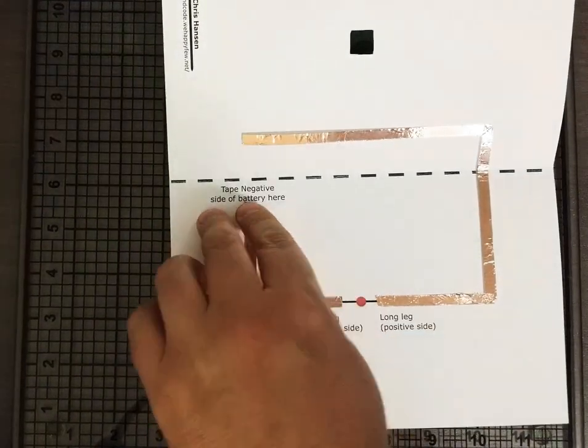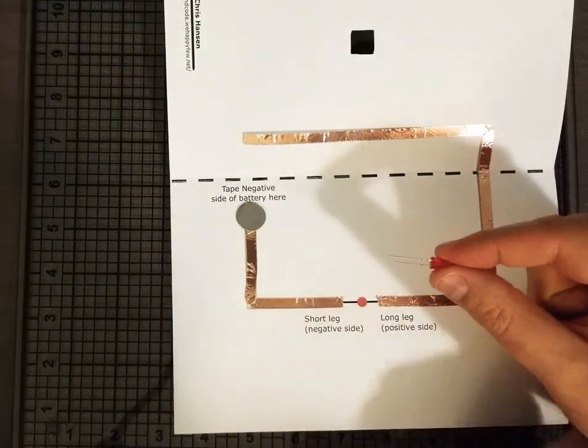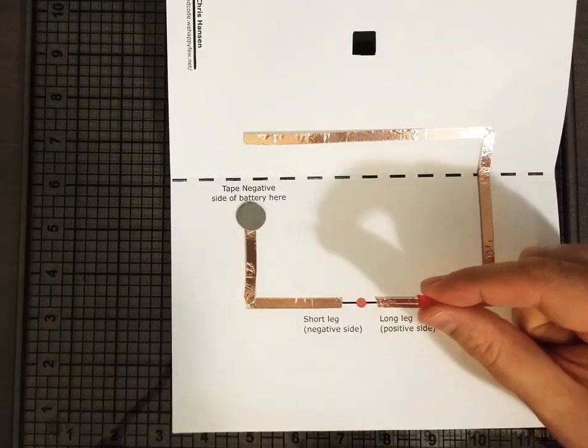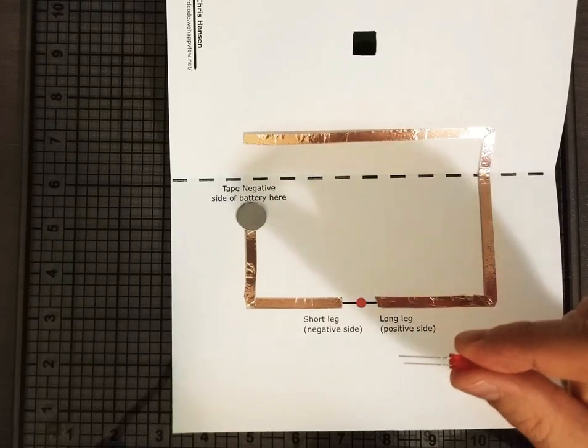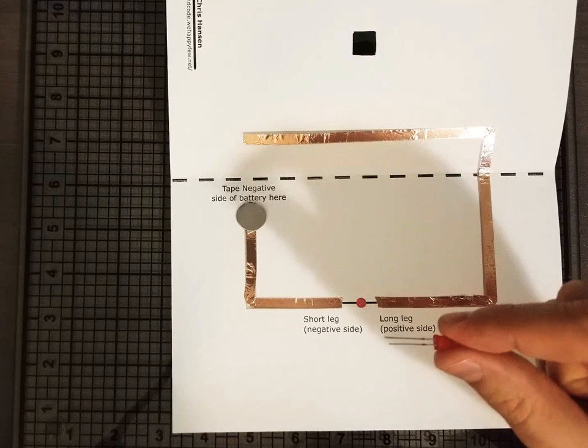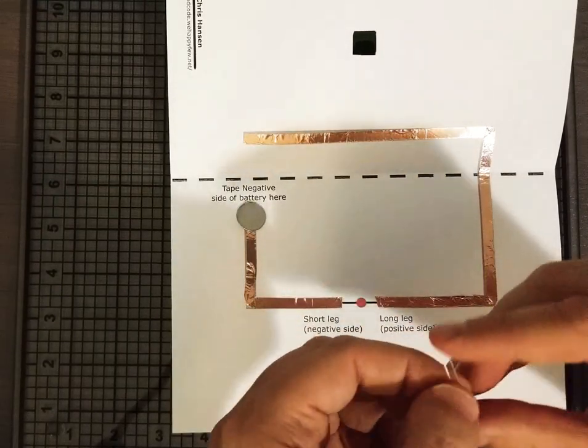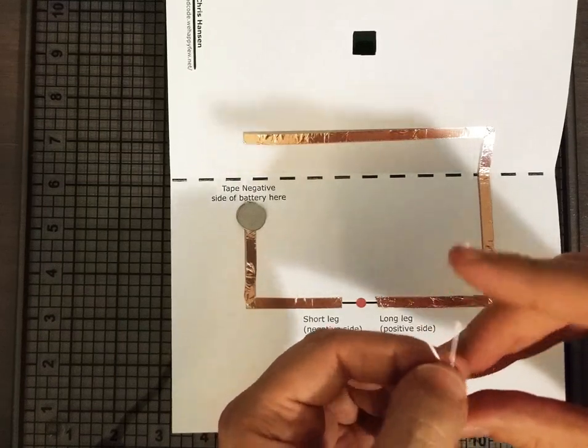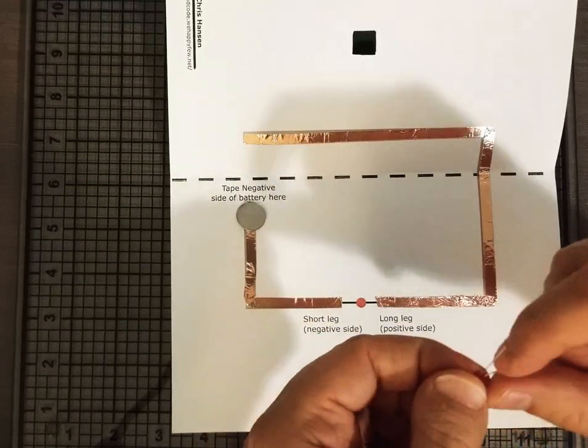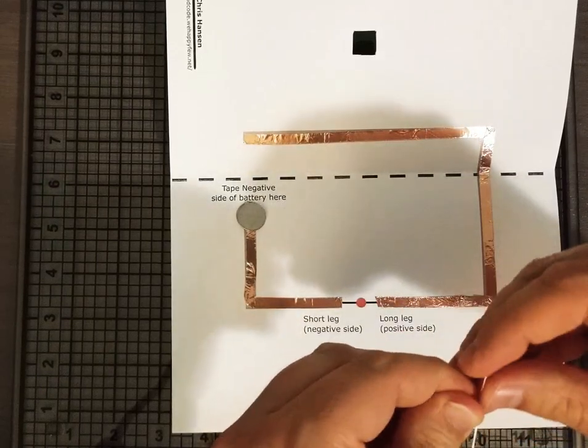LED: once again, this has to be coordinated positive and negative. And you can probably see that one leg of the LED is a little bit longer than the other one. That is our positive leg, and we want to make sure that this lines up correctly. So these legs are very bendable. Make sure you know which one is the positive leg because it's harder to tell when they're spread out.